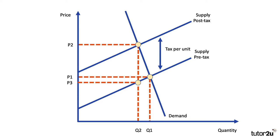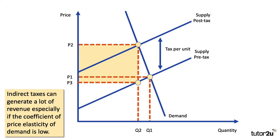Here's a diagram showing a relatively price inelastic demand. The tax is on suppliers, so the tax increases by the vertical distance between the two supply curves. The equilibrium price goes up from P1 to P2, and the total tax revenue is this yellow shaded area. The consumer pays P2, the government takes the difference between P2 and P3, and therefore the producer keeps P3. So indirect taxes can generate a lot of tax yield if the coefficient of elasticity is low.